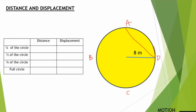The distance traveled corresponds to the arc length, which is part of the perimeter. The perimeter of the whole circle is 2πr, and with radius 8 meters, the full perimeter is 16π. For one-fourth of the circle, the distance is 16π ÷ 4 = 4π. For half, it is 8π. For three-fourths, it is 12π. And for the full circle, the distance is 16π.